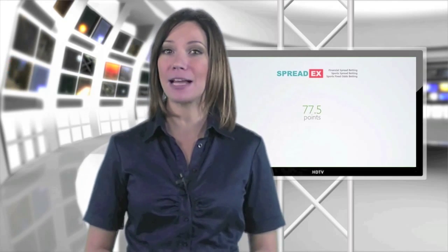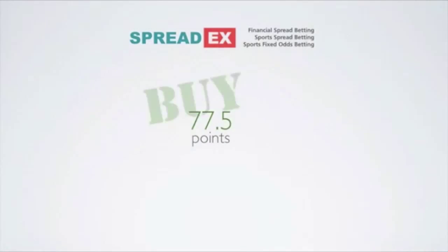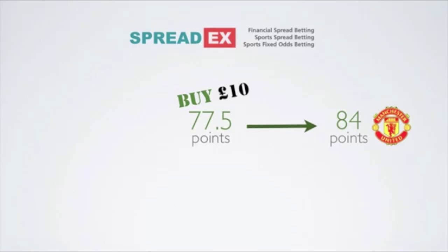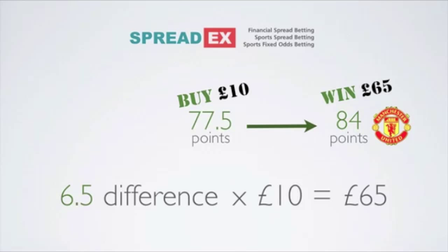At the start of a new campaign, we may predict Man United will get between 76 and 77.5 points by the end of the season. If you bought £10 a point at 77.5 and Man United ended the season on 84 points, you would win £65 — which is the difference between 84 and your buy price of 77.5, multiplied by your £10 stake.